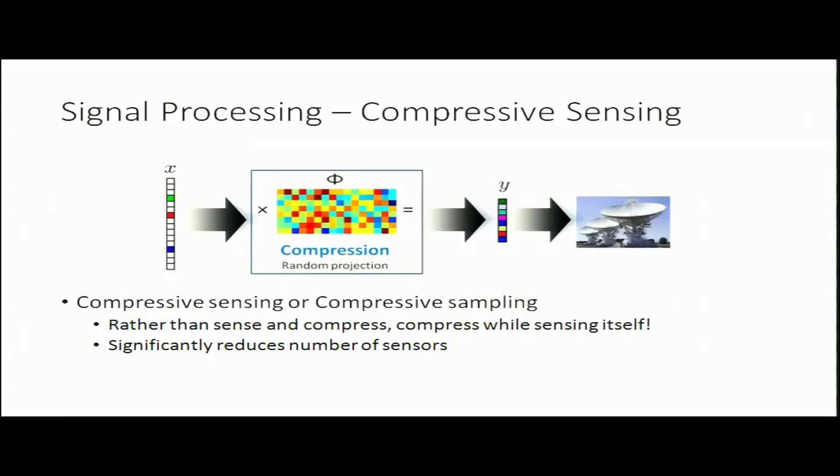Signal processing is another very large area where optimization has several applications. For instance, most of you must have heard of the paradigm of compressive sensing. Traditionally you capture an image and compress it into a format such as JPEG. Compressive sensing is a radical new paradigm in which you compress while sensing, which significantly reduces the number of sensors required, thereby reducing cost and making the system more efficient.